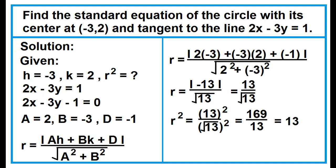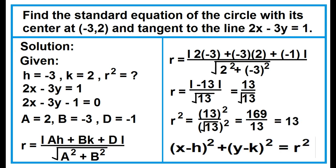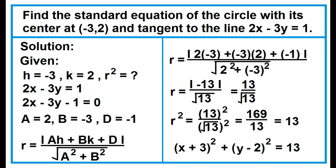r squared equals 13. Substituting the values of h, k, and r squared into the standard form — x minus h quantity squared plus y minus k quantity squared equals r squared — the equation in standard form is x plus 3 quantity squared plus y minus 2 quantity squared equals 13.